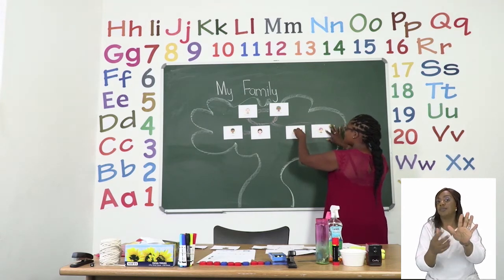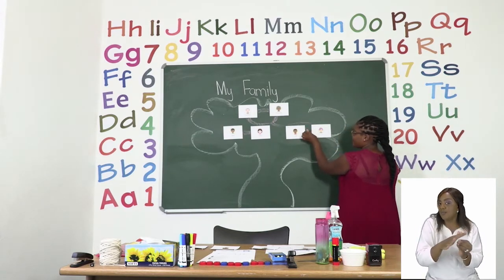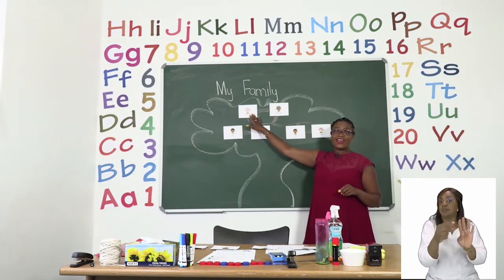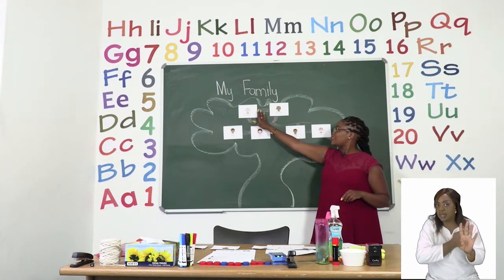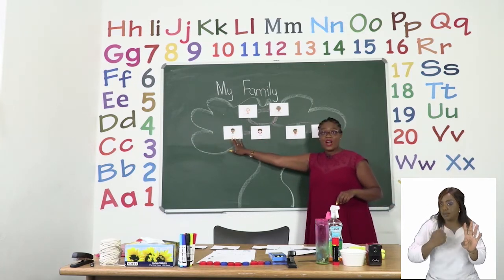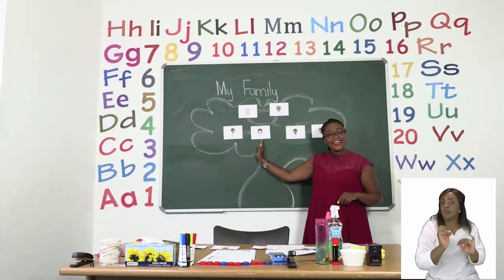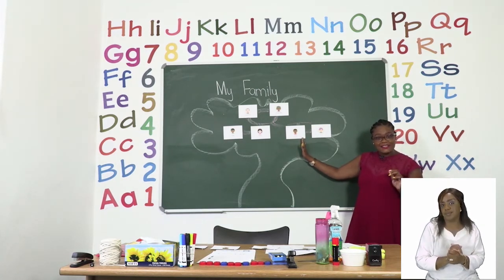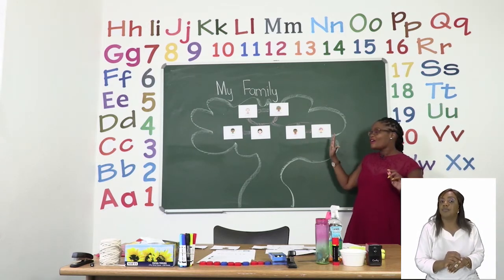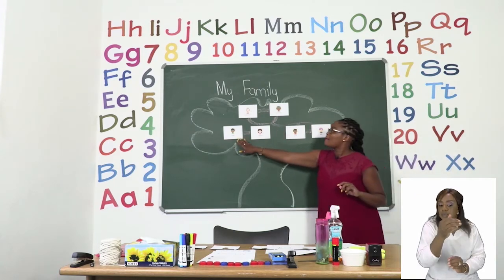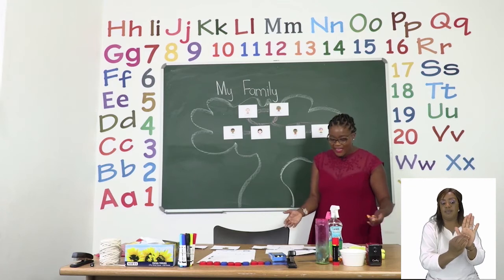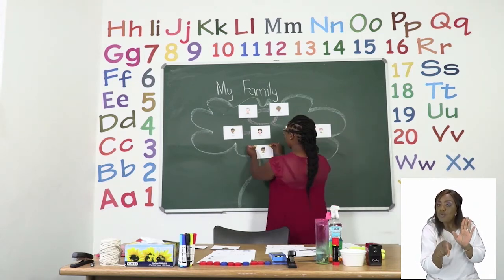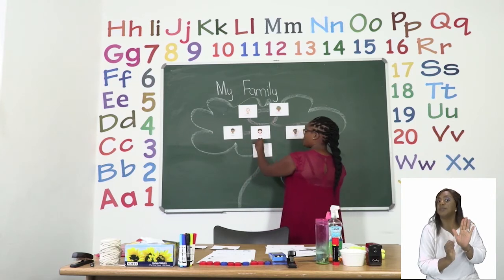Your uncle met your aunt — there we go — and they decided to build their family. So far we have at the top: grandfather, grandmother, then mother and father, and uncle who came from grandfather and grandmother. Mother and father decided to build their family too, and in that family there is you — you are part of the family, looking so wonderful.